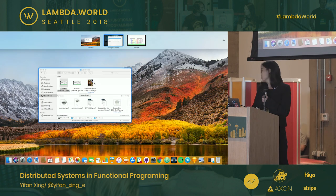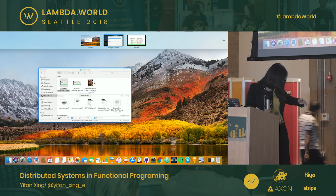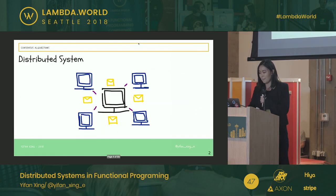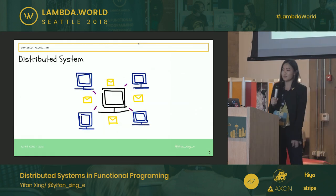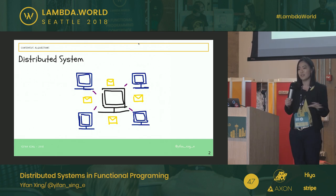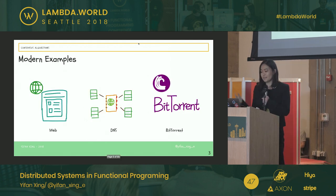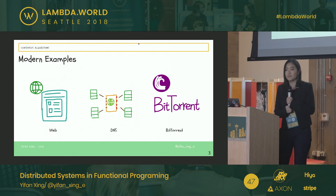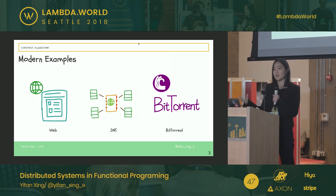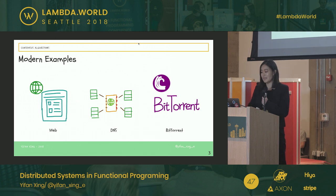Let's switch back to the slides. So let's first talk about what a distributed system is. You can think of them as components located on different parts of the network that communicate and collaborate via message sending. A few examples would be the web — where clients are browsers and the server is the web server — as well as DNS. BitTorrent are also examples of distributed systems.